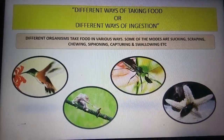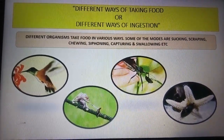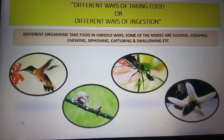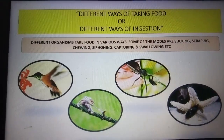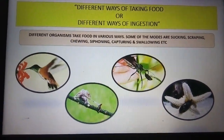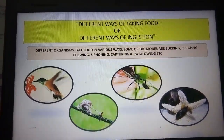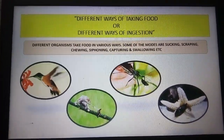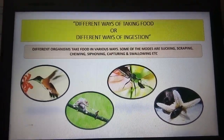Dear children, today I will tell you that these variety of animals obtain their food through a broad variety of feeding patterns. You can see different ways of taking food, or different ways of ingestion. Different organisms take food in various ways. Some of the modes are sucking, scraping, chewing, siphoning, capturing and swallowing, etc.